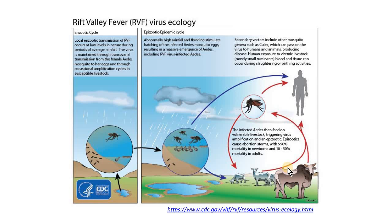The most significant clinical outcome of this disease is abortion storm, neonatal mortality, and areas of hemorrhage and necrosis in multiple organs, especially the liver and the gastrointestinal tract.